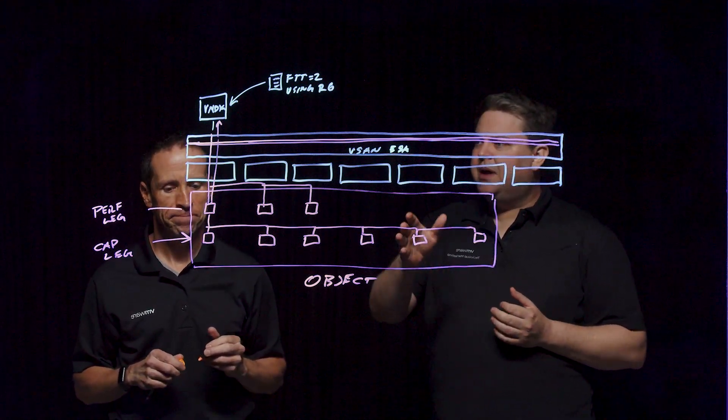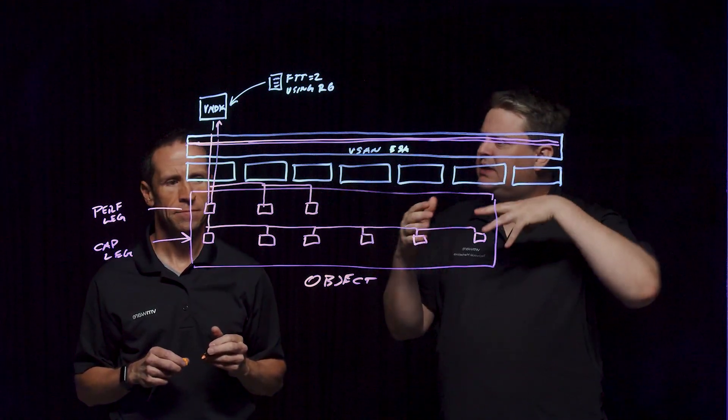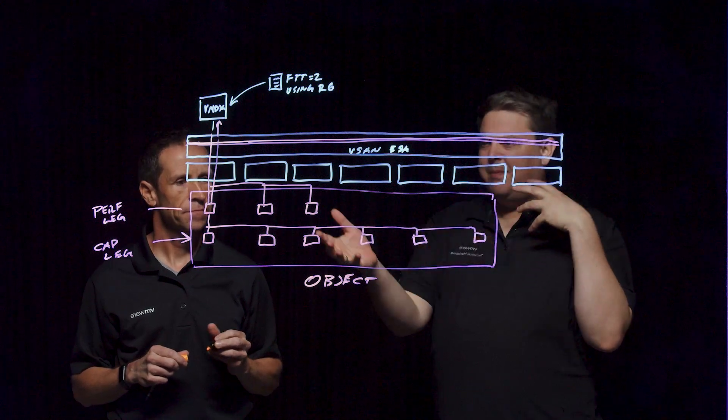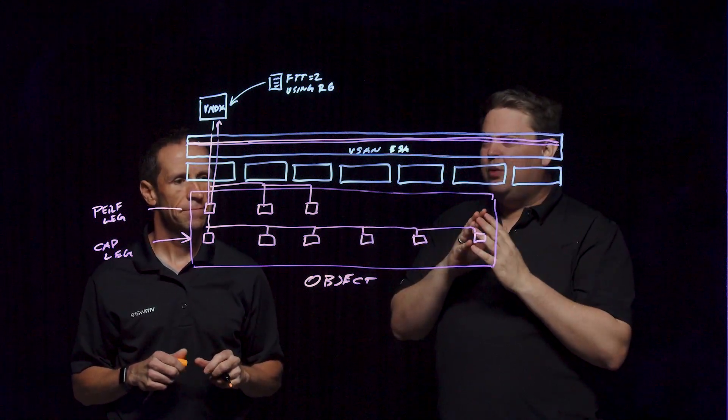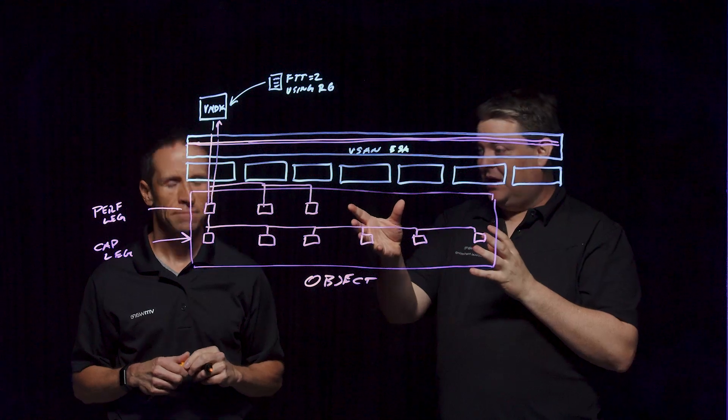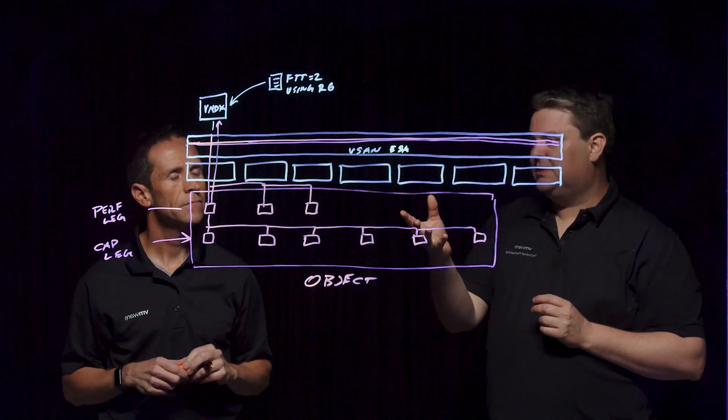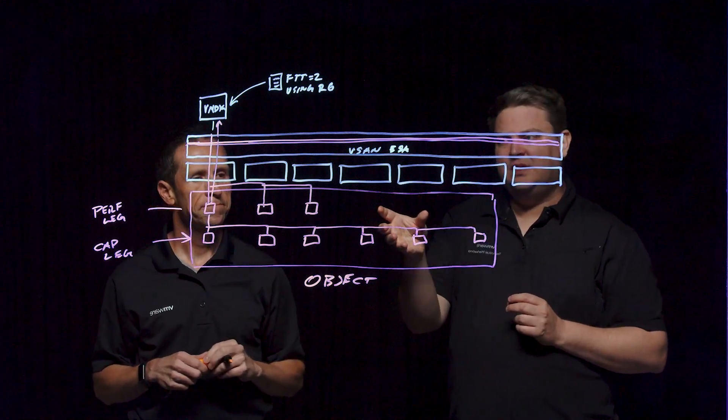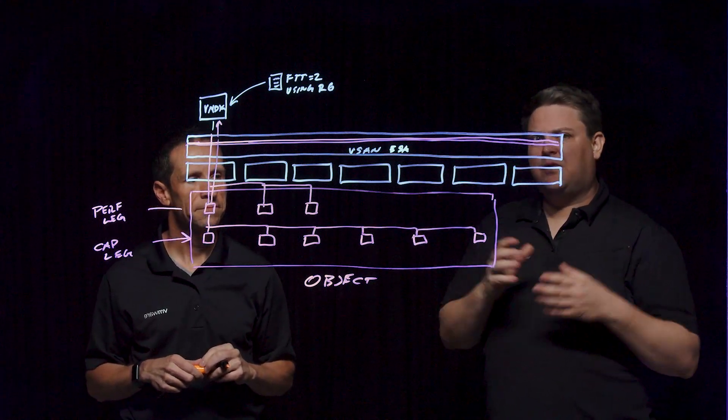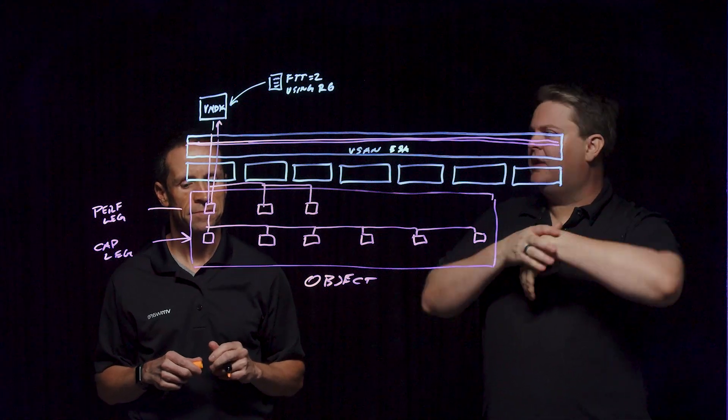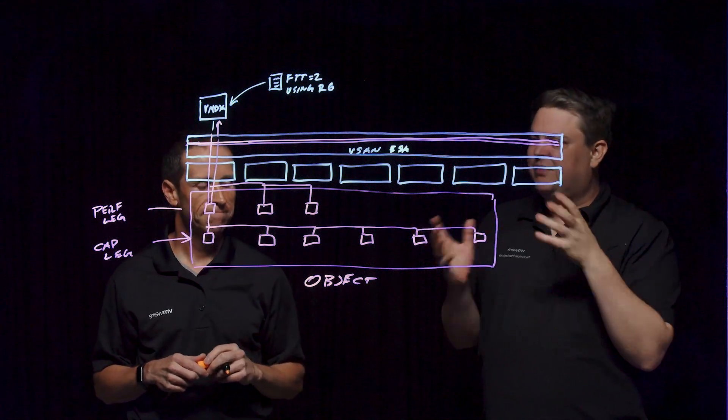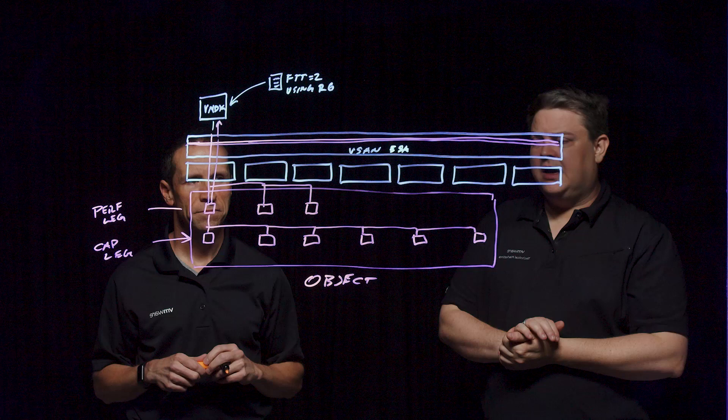And one thing I'll note is you may look at the performance leg and say, well, isn't that a lot of capacity overhead? Because it is different that we're in the megabytes here per object. So this is actually very low in terms of the amount of capacity it's going to live within this side. We're going to get these performance benefits, but we're not generating a lot of unnecessary overhead. And your math for figuring out usable space is not going to get that complicated.